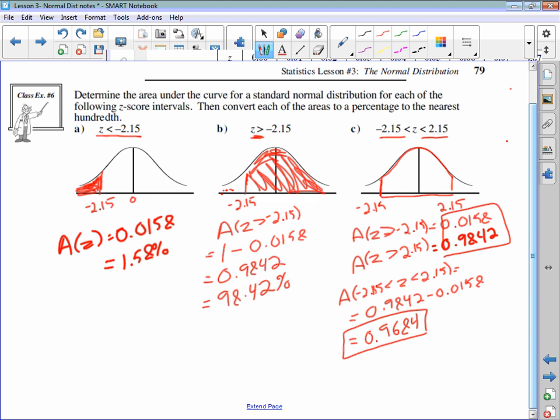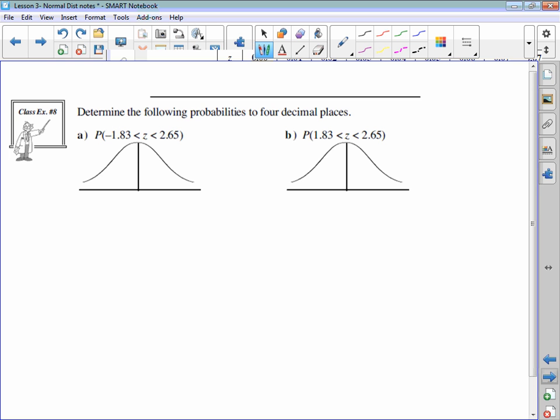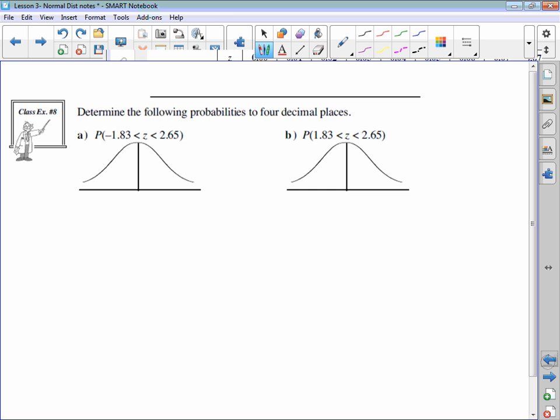So those are the three examples that I could give you, where you have to find the area to the left of a z-score like in A, to the right of a z-score in B, or between two z-scores like in C. I don't think you need to see these. Maybe I'll try one of these again.